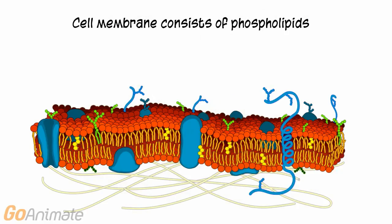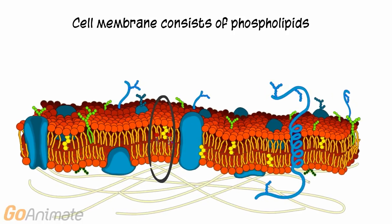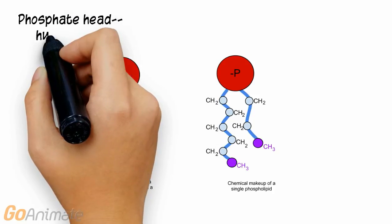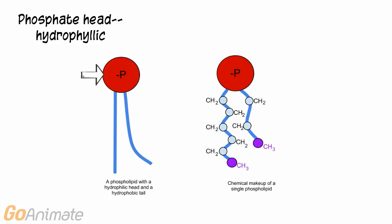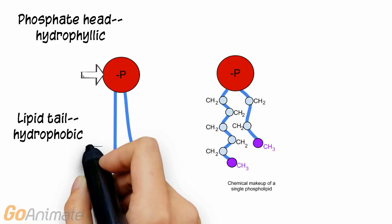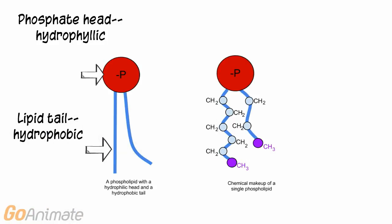The cell membrane consists of phospholipids. Phospholipids include a phosphate head, which is hydrophilic, or water-loving, and the lipid tail, which is hydrophobic, or water-hating.